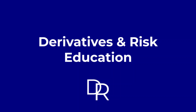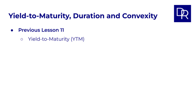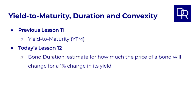Welcome back to Derivatives and Risk Education. In our previous lesson, number 11, we talked about yield to maturity. Today, in lesson 12, we'll look at bond duration, which gives us an estimate of how much the price of a bond will change for a 1% change in its yield. We'll also look at the second order effect of bond convexity and why it is great for bond holders.